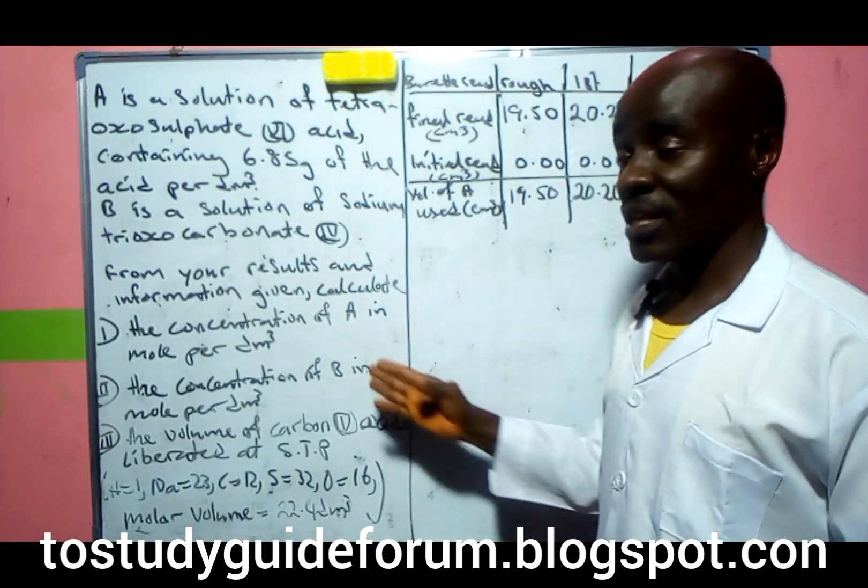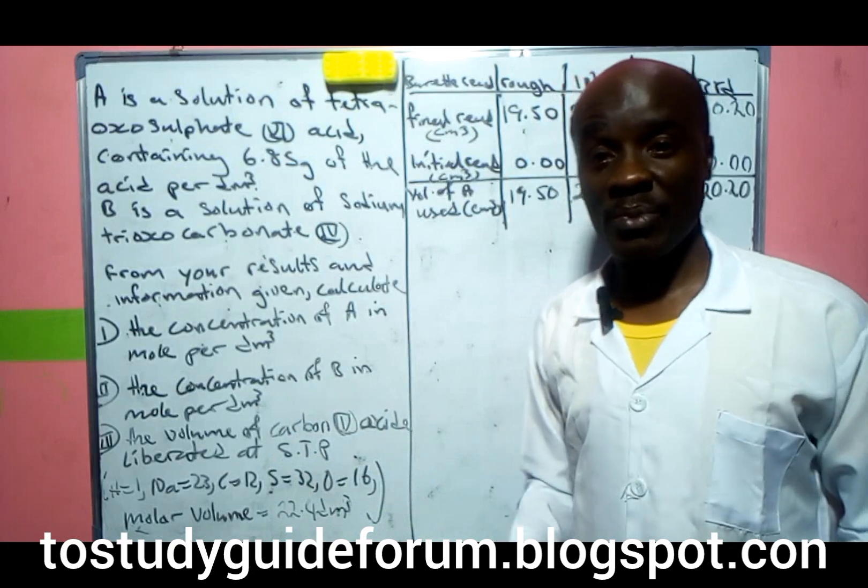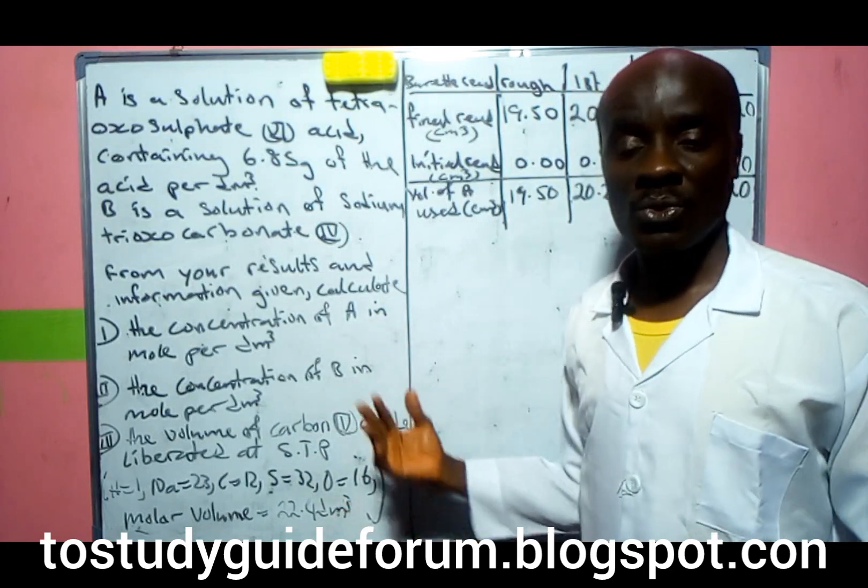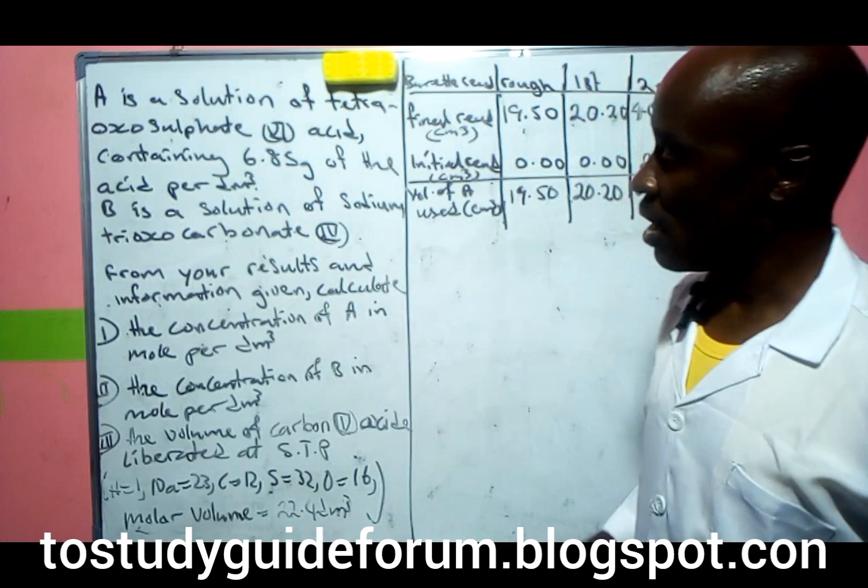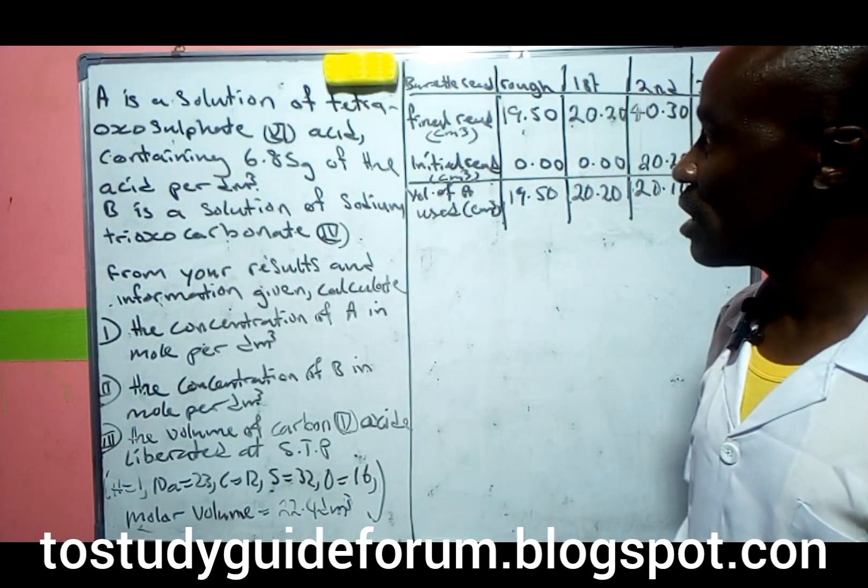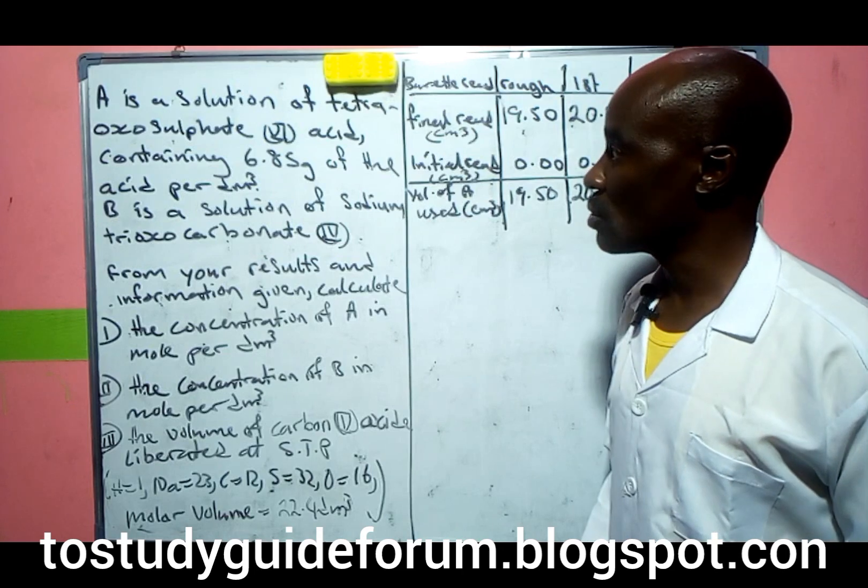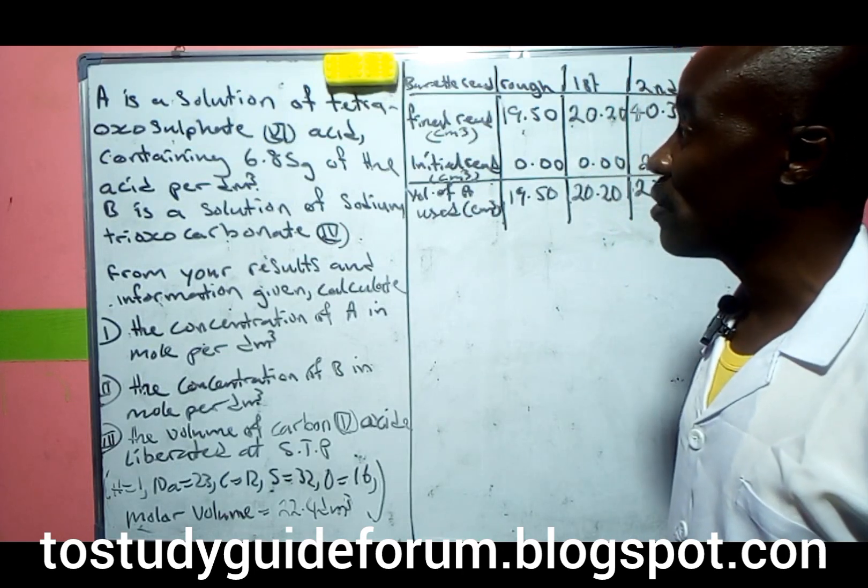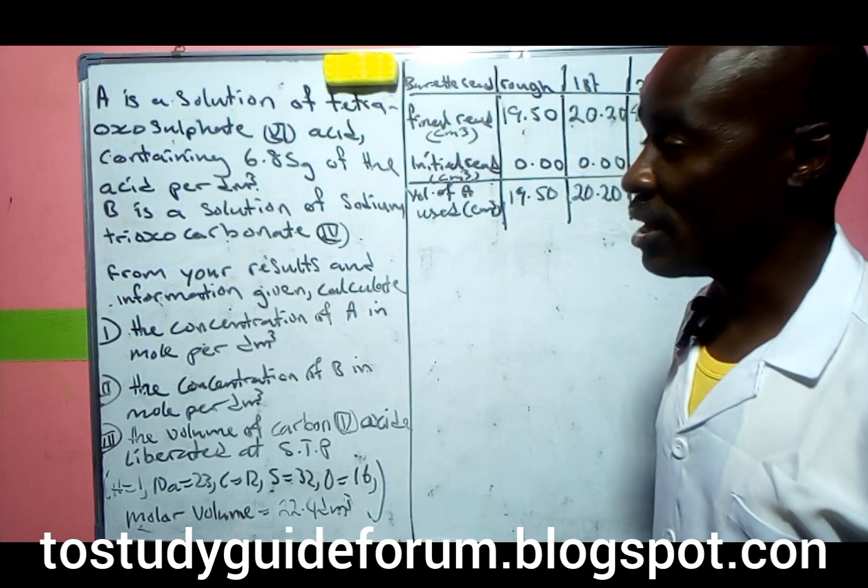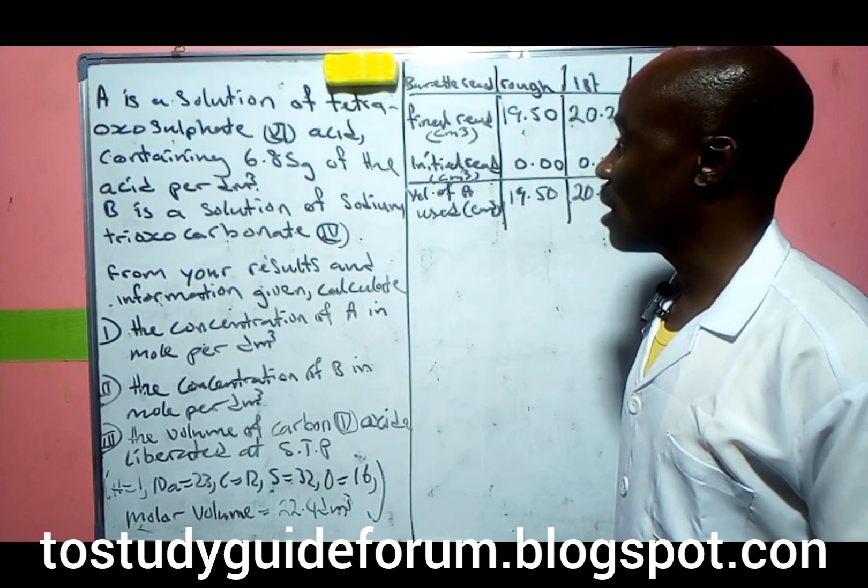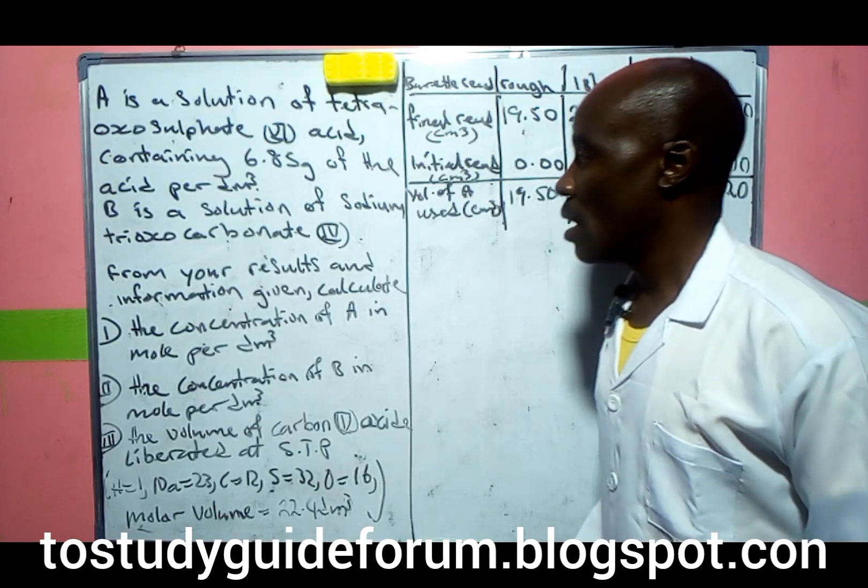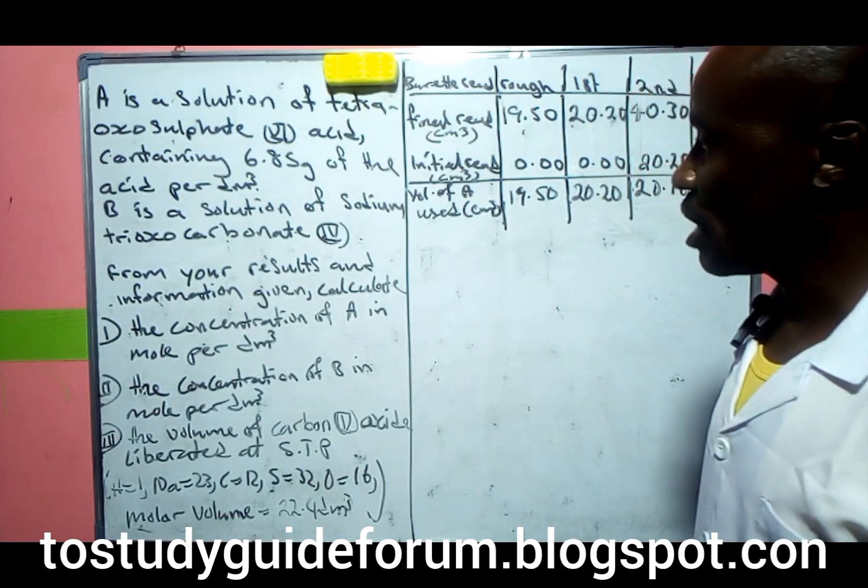This is not the actual exam question, but a past question to help us practice. A is a solution of H2SO4 containing 6.85 grams of the acid per dm³. B is a solution of sodium trioxocarbonate.